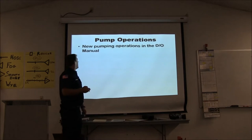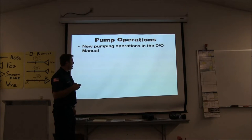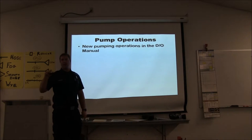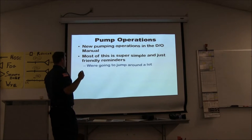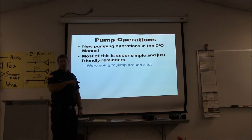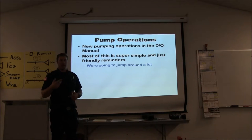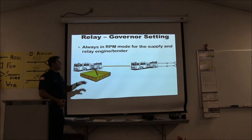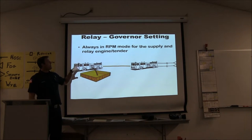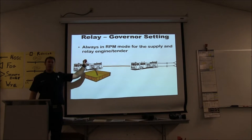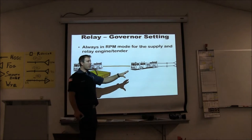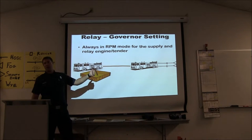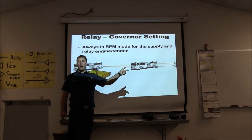Pump operations — all new DO manual content. For relay: relay equals RPM mode; people on the end of a hose line equals PSI mode. When you're relay pumping you're always in RPM mode. If I've got people on the end of a hose line, my governor needs to be in PSI. Easy to remember: relay RPM, people PSI.